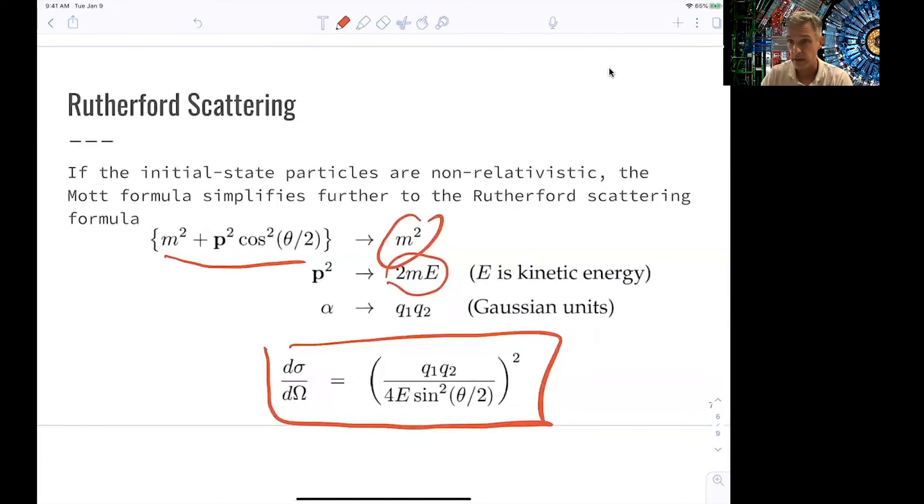So this closes the loop here in our cross-section discussion and how we can think about those things. The Rutherford cross-section is nothing else but a big billiard ball being hit by a small billiard ball, and looking at how the cross-section differentially evolved out of this setup.